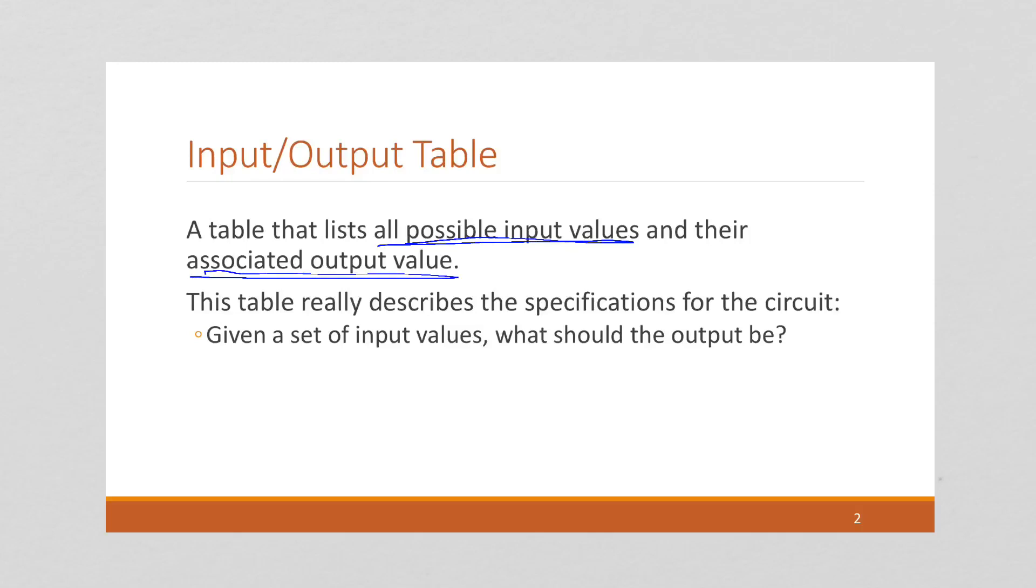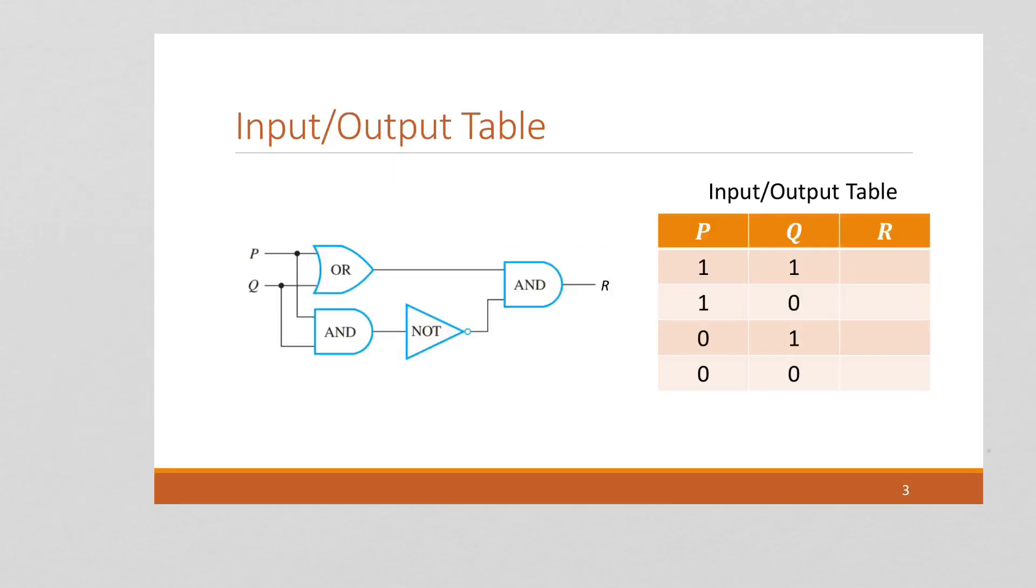This is really not meant to be the design for a circuit, this is the specifications for a circuit. Given a set of input values, what should the outputs be? Here's an illustration of a circuit, and our input-output table is listing all possible combinations of inputs and wants to know, given this circuit, what are the outputs going to be?